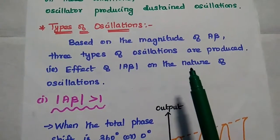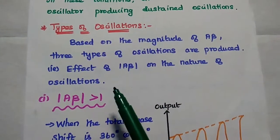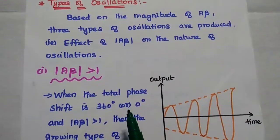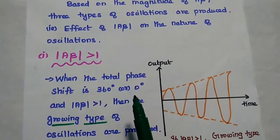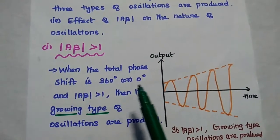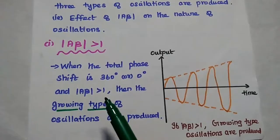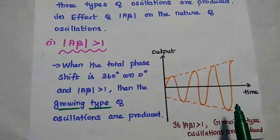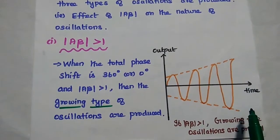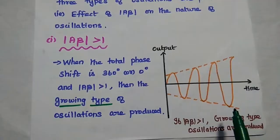Based on the magnitude of Aβ, there are three types of oscillations — also known as the effect of Aβ on the nature of oscillation. The first case: when the modulus of Aβ is greater than 1 and the total phase shift around the closed loop is 360 degrees or 0 degrees, growing type oscillations are produced. Growing means the amplitude is exponentially increasing.